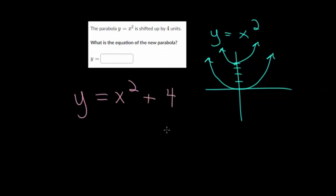To make sense of this, you can plot points. If you plug in zero, you get zero squared plus four, which is four — that's this point here. If you plug in one, one squared is one plus four, which gives you five — that's this point here. If you plug in negative one, you get the same y value of five. If you plug in two, two squared is four plus four is eight, so that would be somewhere up here on the curve.